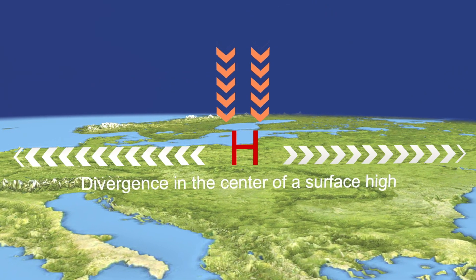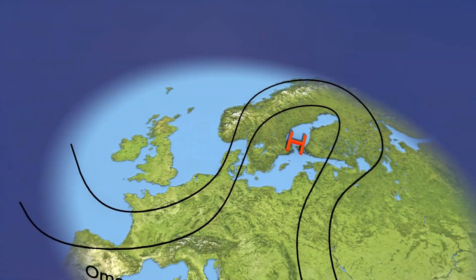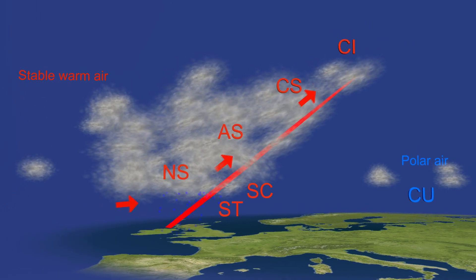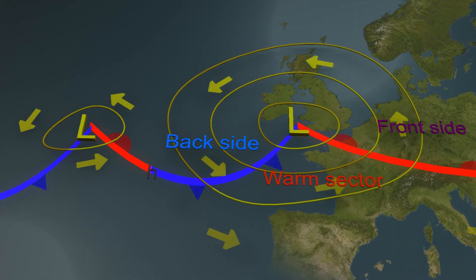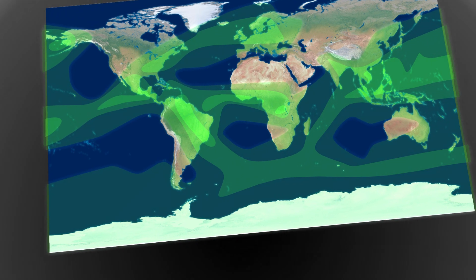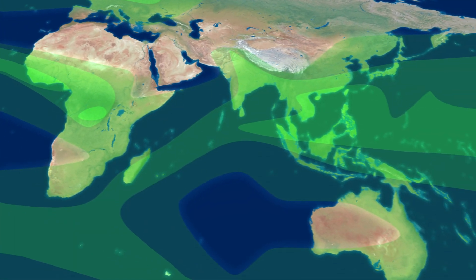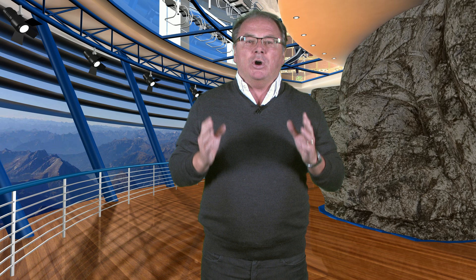We discuss the reason for stable flight conditions within a high pressure system and the formation of fronts within a dynamic low. With the chapter on climatology, we will take you on a trip around the world explaining the formation of blizzards, sandstorms, and tropical revolving storms.